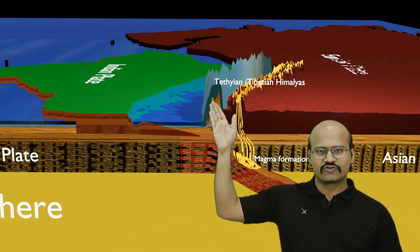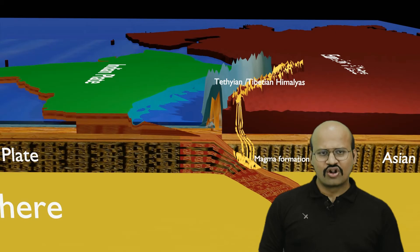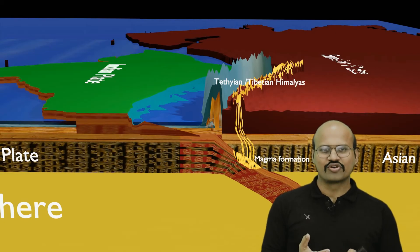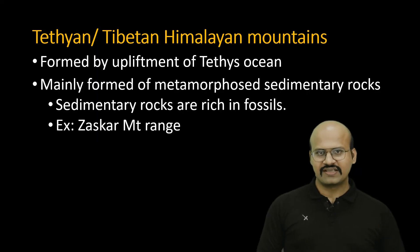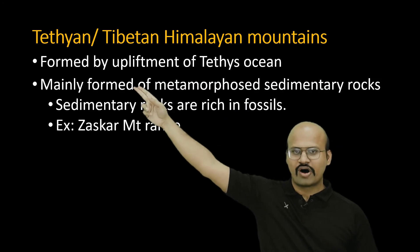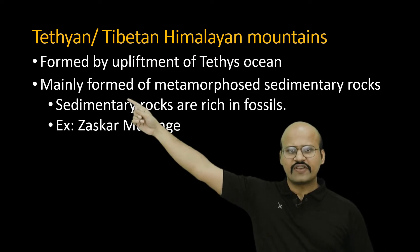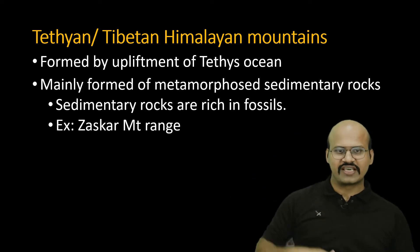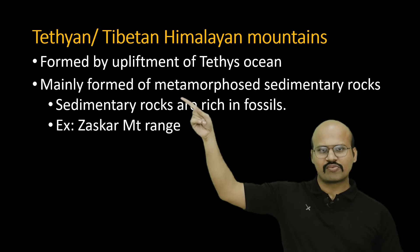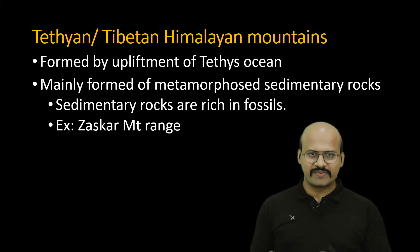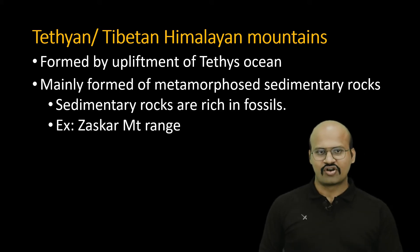The Tethian or Tibetan Himalayas were formed by the upliftment of the Tethys ocean crust, so they have a lot of sedimentary rocks because in oceans we find sedimentary rocks. Moreover, because the sedimentary rocks came from the ocean, they contain a lot of fossils of animals. These sedimentary rocks got metamorphosed during the process of upliftment, so they are mainly formed of metamorphosed sedimentary rocks. The Zaskar mountain range is an example of the Tethian or Tibetan Himalayas.